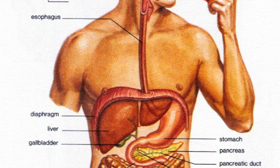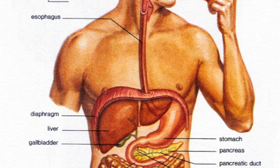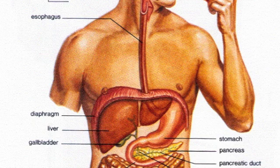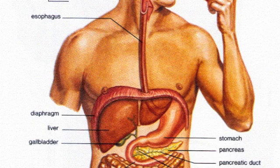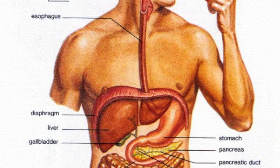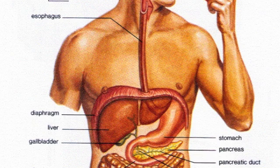Fats are also broken down, but they must be emulsified in order to be digested. This means that a phospholipid called lecithin is used to surround fats. This phospholipid is not different from the one found in the plasma membrane of cells. The resulting phospholipid is then broken down by an enzyme called phospholipase.